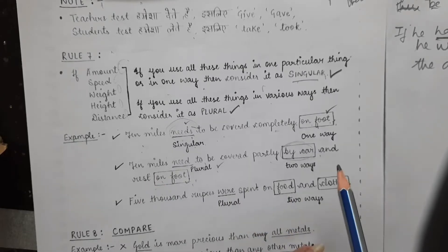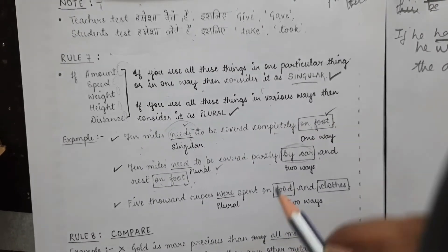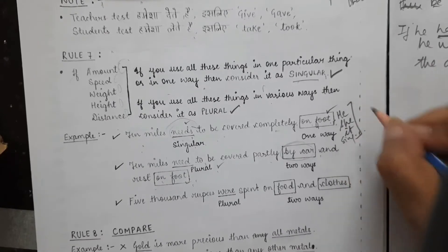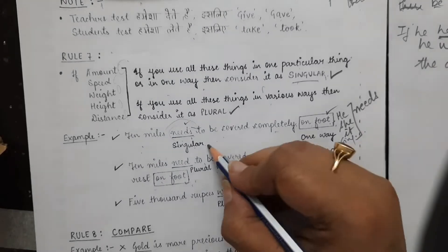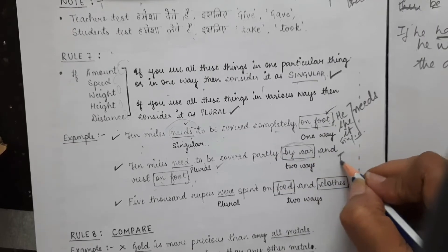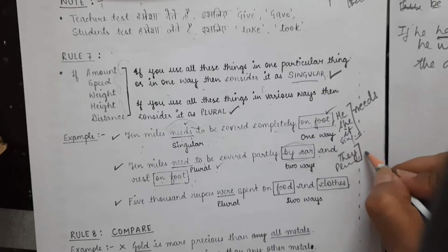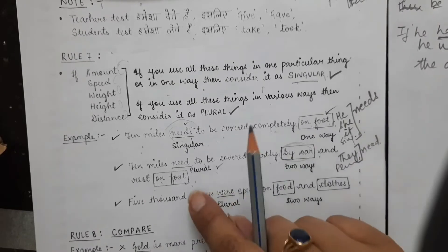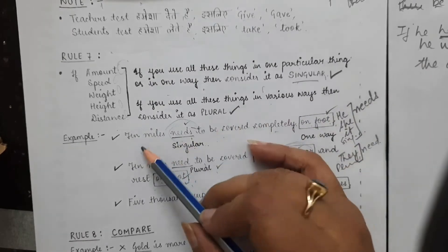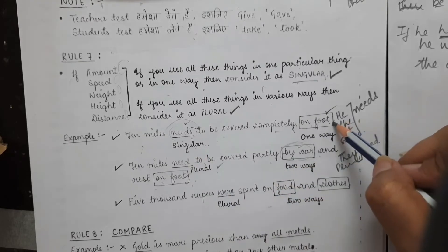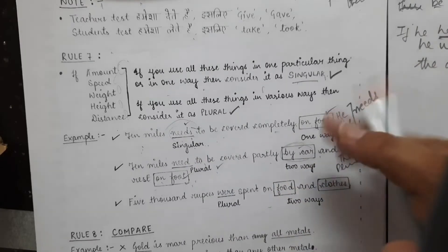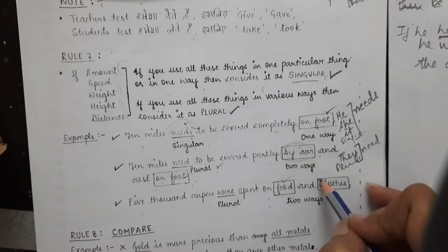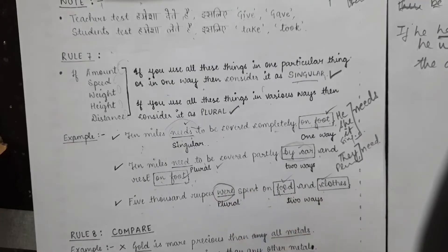'10 miles need to be covered partly by car and rest on foot' — plural because divided into two parts. When treated as a single unit, singular verb: 'it needs to be covered'. Another example: '5000 rupees were spent on food and clothes' — spent on two things (food and clothes), so plural verb 'were' is used. This rule is very clear.